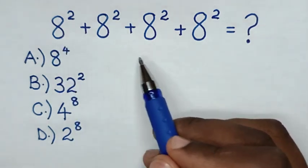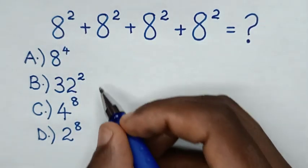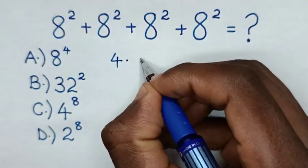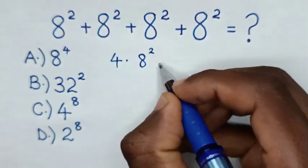So, from here there's 1, 2, 3, 4, 8 power 2. So it will be 4 times 8 power 2 is equal to...